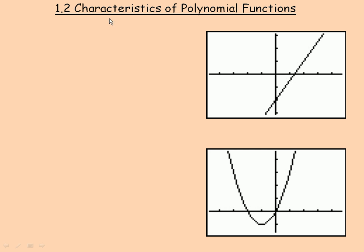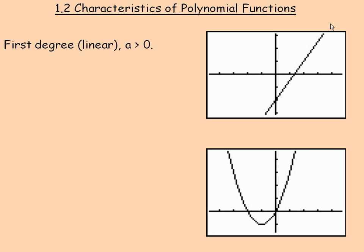In this lesson, we'll take a look at some characteristics of polynomial functions. The first several polynomial functions — in the first example, we have a straight line, and this is called a first degree or linear function. The leading coefficient is greater than zero; we'll call the leading coefficient 'a' here, and so it moves up as you go from left to right across the screen.